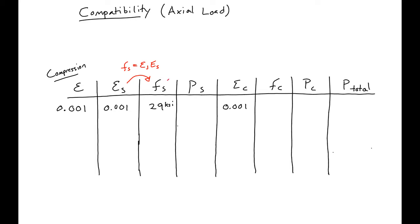Then we move from our stress to force by taking our stress times our area. So if we say that our steel area is equal to 5.08 square inches, and our concrete area is equal to 138.92 square inches, like in the lecture, then we'll find our steel force is 147.3 kips.